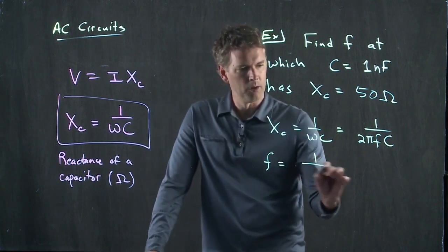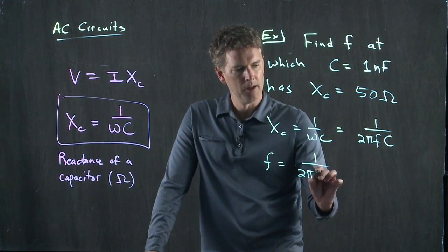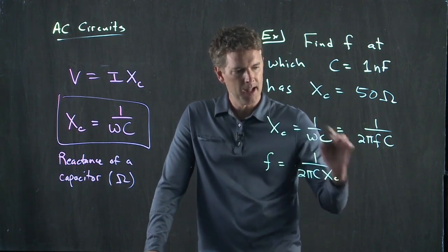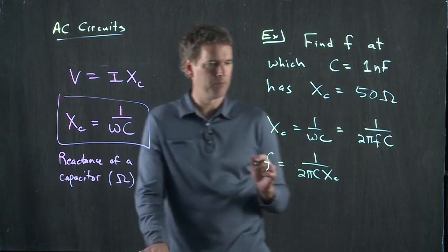f equals 1 over 2 pi C times X sub C, and now we have all those numbers.